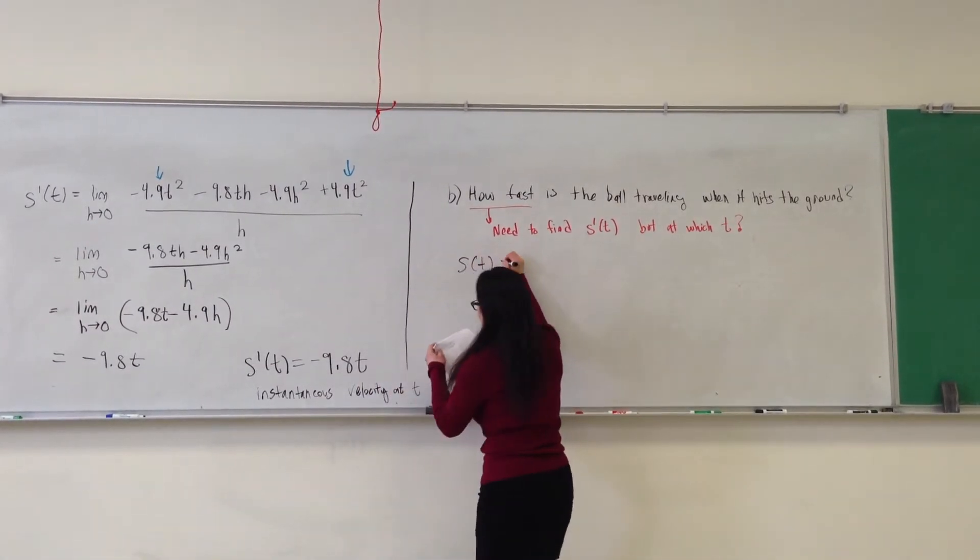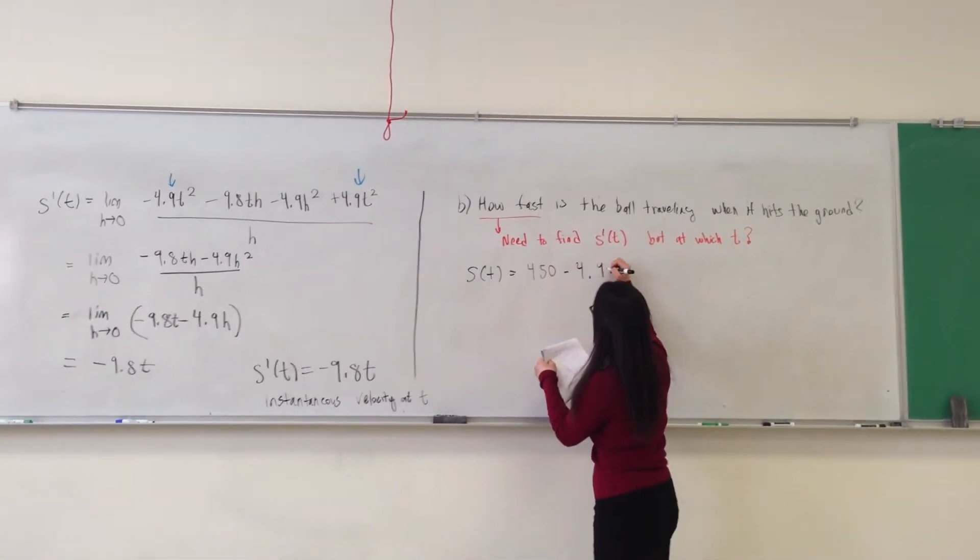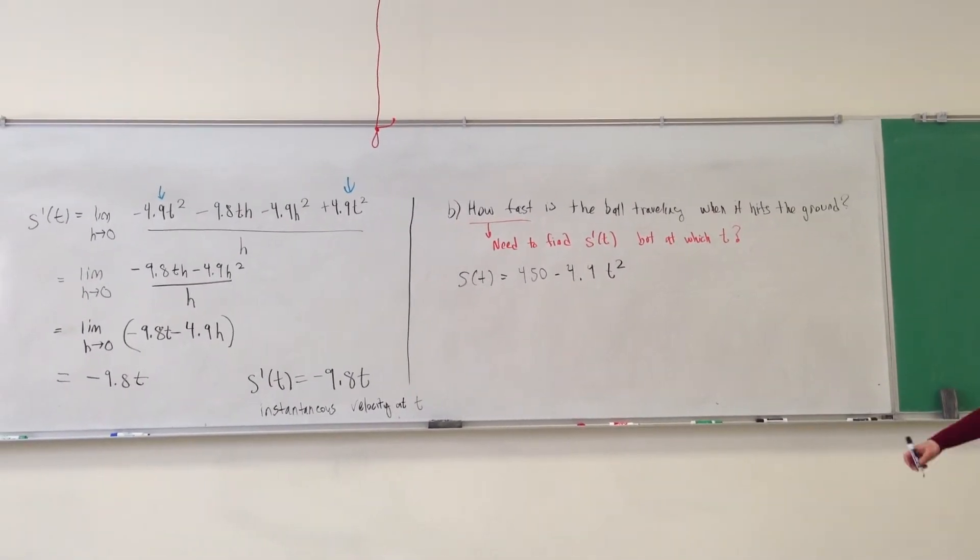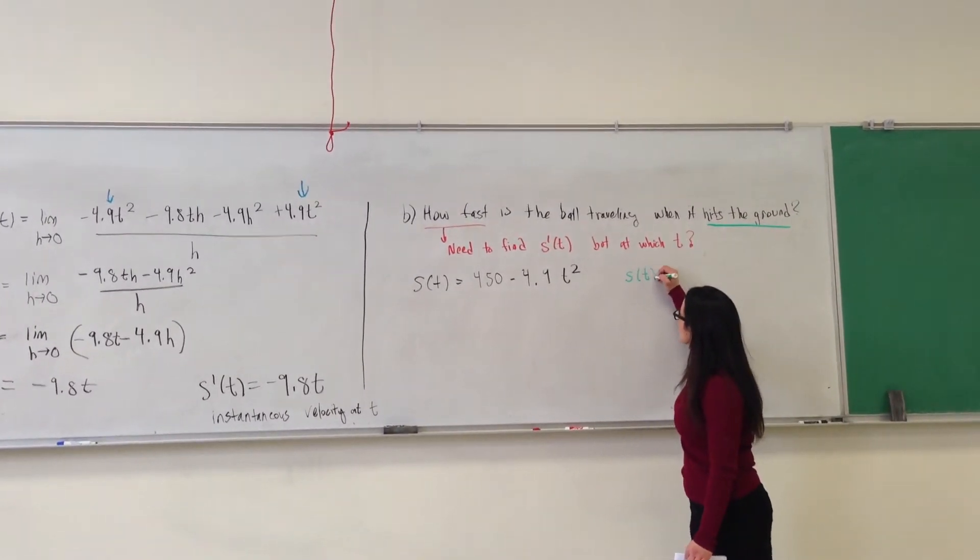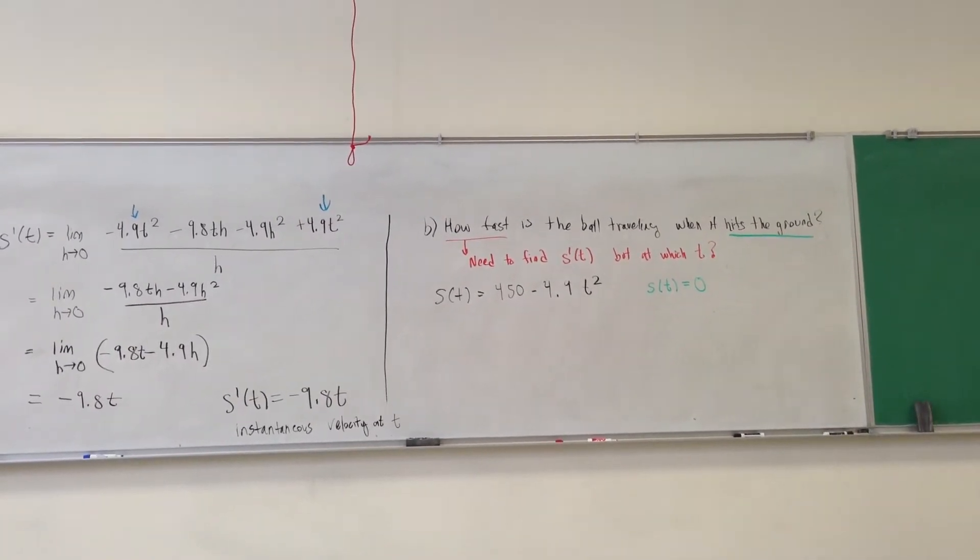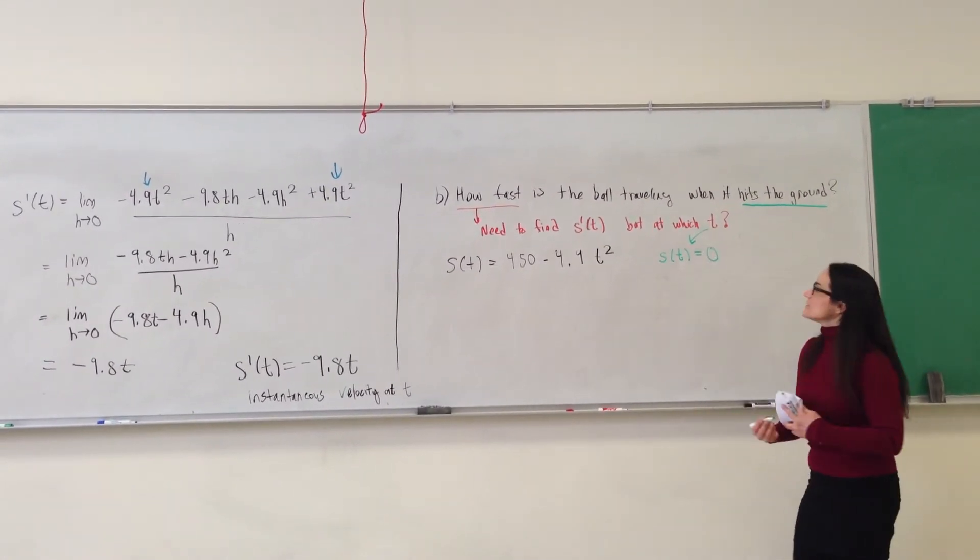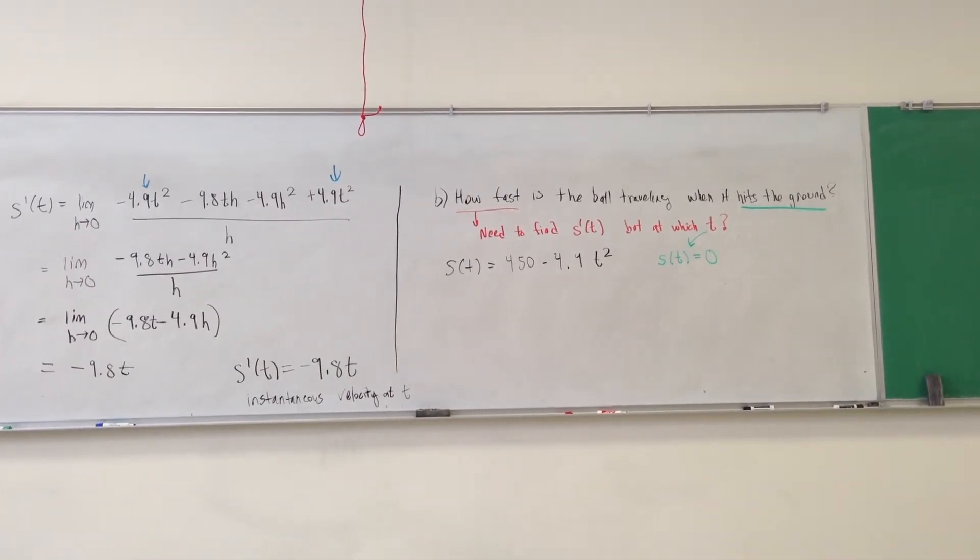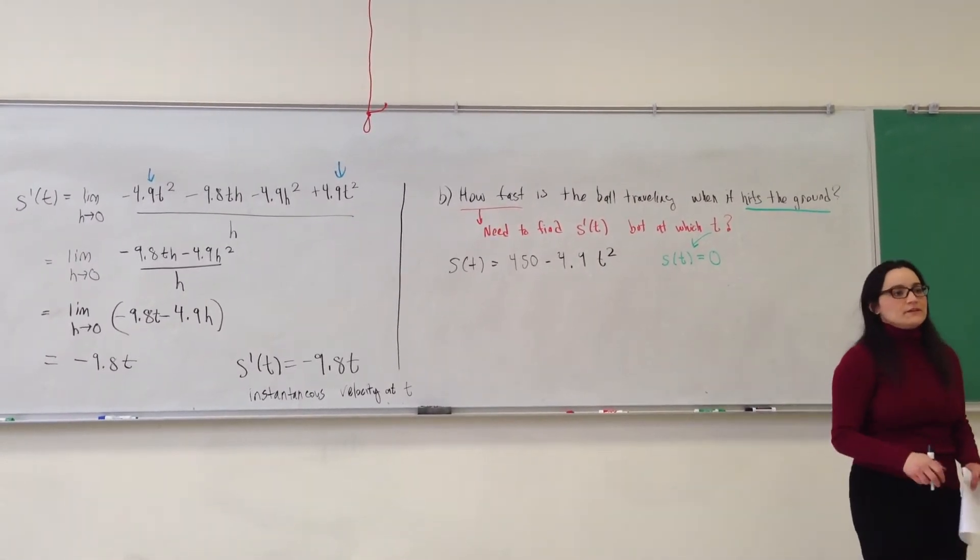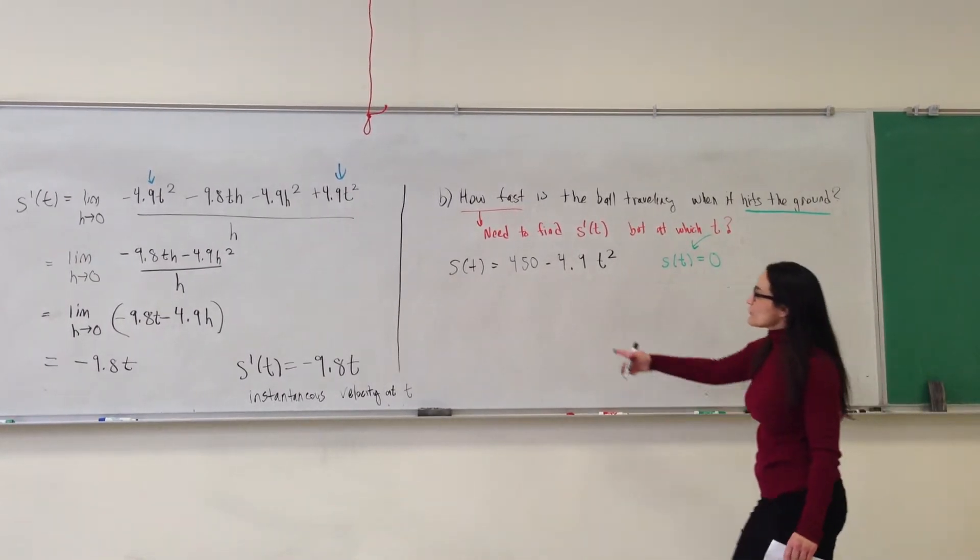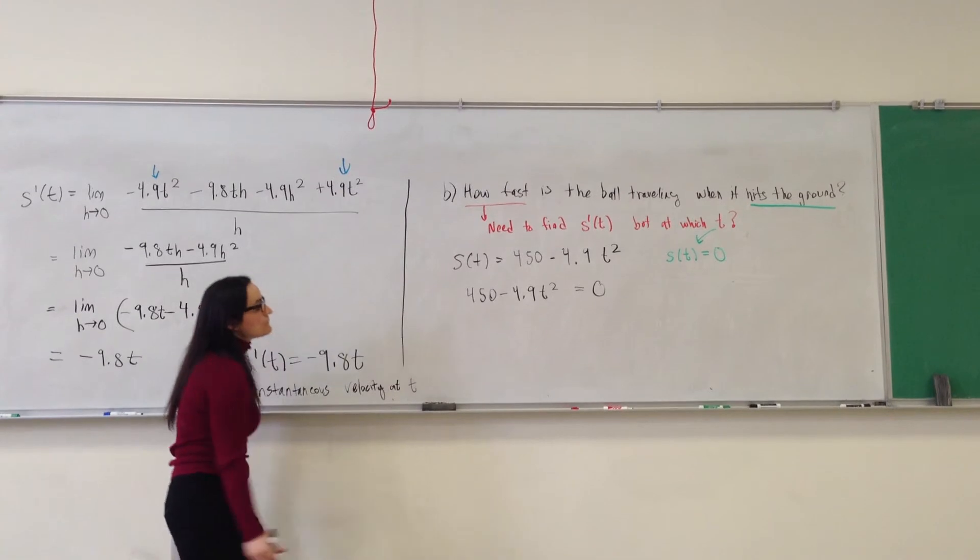So s of t, let's write down s of t since I no longer have it. So s of t was the height of the ball in meters and is given by the formula 450 minus 4.9 t squared. So when the ball hits the ground, that corresponds to height zero. So we want to find t at which s of t is equal to zero. So first, we have to solve for the t when s is zero. And then we have to find the velocity at that time t. So first, we take our height equation 450 minus 4.9 t squared and set that equal to zero.